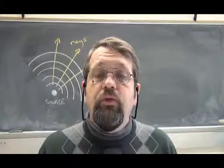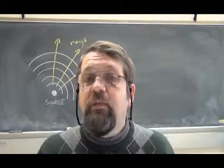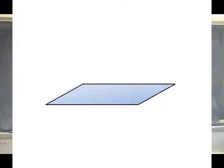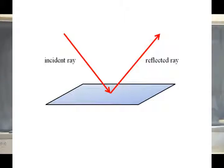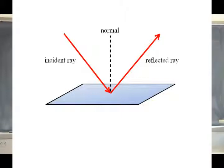Ray optics is especially useful in understanding how light reflects from a smooth surface. Let's imagine that we have a smooth surface, like a mirror or a plate of glass, and we imagine light impinging on it. We can describe that light by means of an incident ray — actually a whole bunch of incident rays, but let's consider a particular one. It strikes the surface, and then the light propagates away from the surface along what's called the reflected ray. To define the law, it helps to draw a perpendicular line to the surface — the normal to the surface. Normal, of course, is a mathematical term for perpendicular.